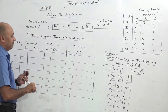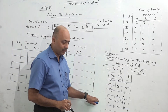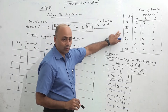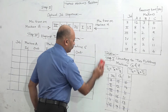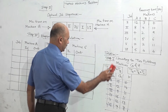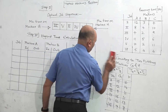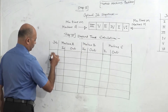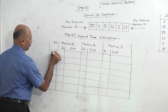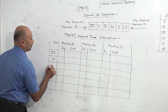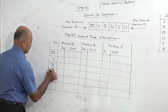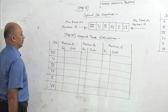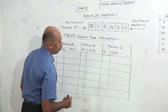The purpose of converting to a two-machine problem was only to find the allocations. Now for the elapsed time calculation, we refer back to the original values for machines A, B, and C. The G and H fictitious machine data is no longer needed. The optimal sequence is: 3, 5, 2, 4, 1, 6.